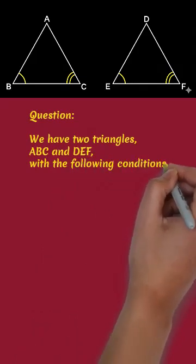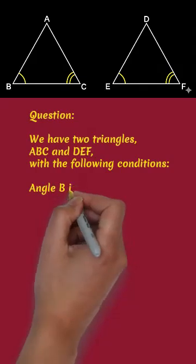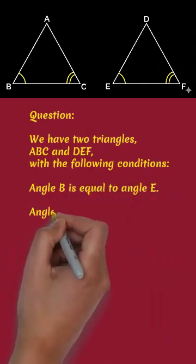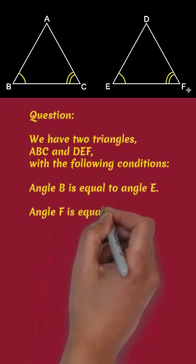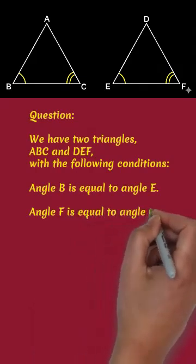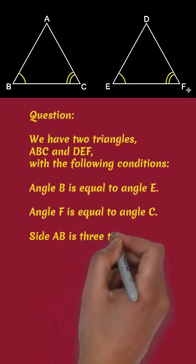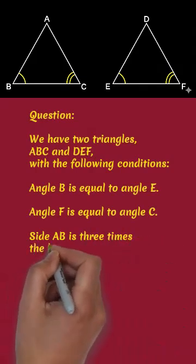We have two triangles ABC and DEF which are following certain conditions. Angle B is equal to angle E, angle C is equal to angle F, and side AB is 3 times the length of side DE.